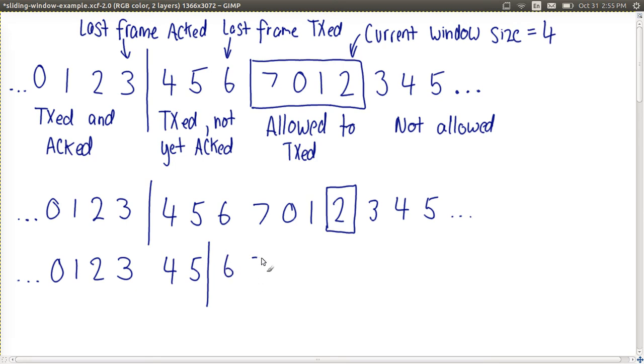Transmitted but not yet ACK is still 6, 7, 0 and 1. 2 is not yet transmitted, we're allowed to transmit.